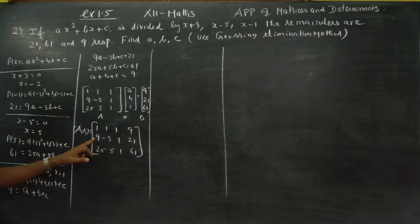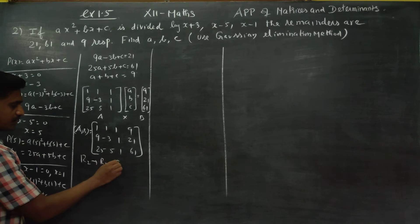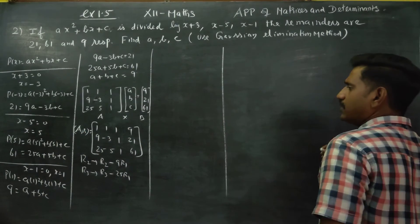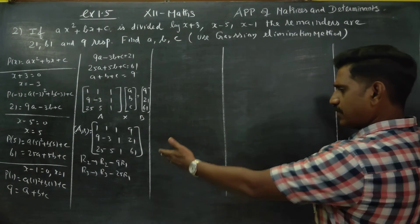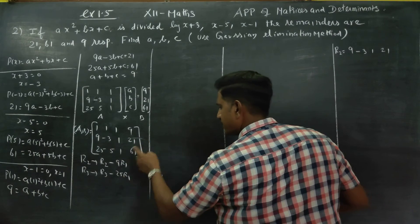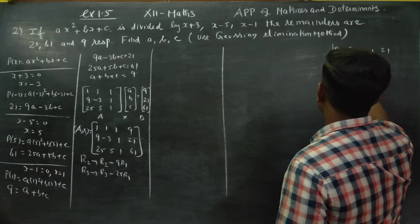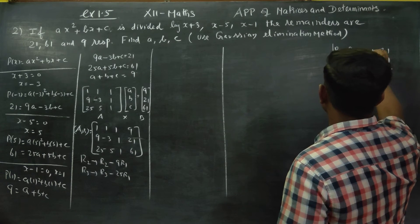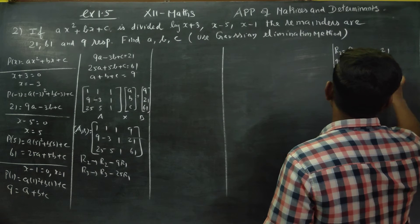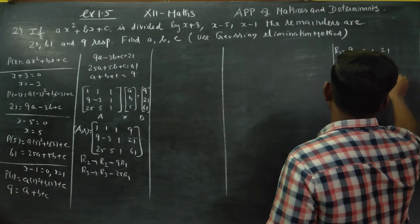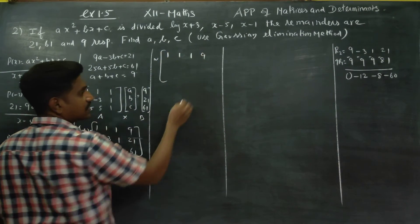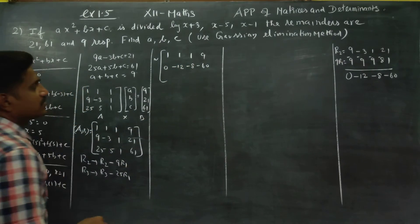Applying R2 = R2 - 9×R1. My R2 is 9, -3, 1, 21. Subtracting 9 times R1: 9-9=0; -3-9=-12; 1-9=-8; 21-81=-60. So the new second row is: 0, -12, -8, -60.